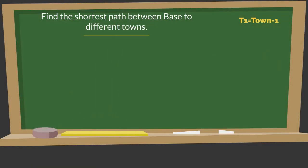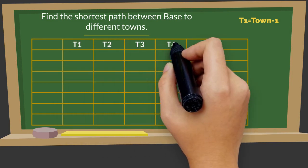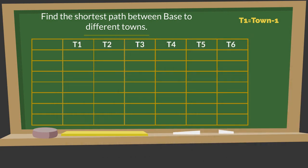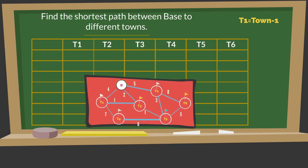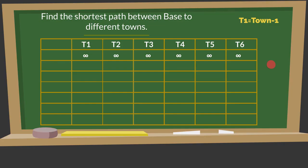First of all, reserve one column for each destination or town to evaluate the least possible distance. Second, assign zero to base, as to reach from base to base one needs to travel zero distance. We will calculate the distance from base to each town, step by step. As the distance from base to different towns is unknown, we suppose that each town is situated at infinite distance.